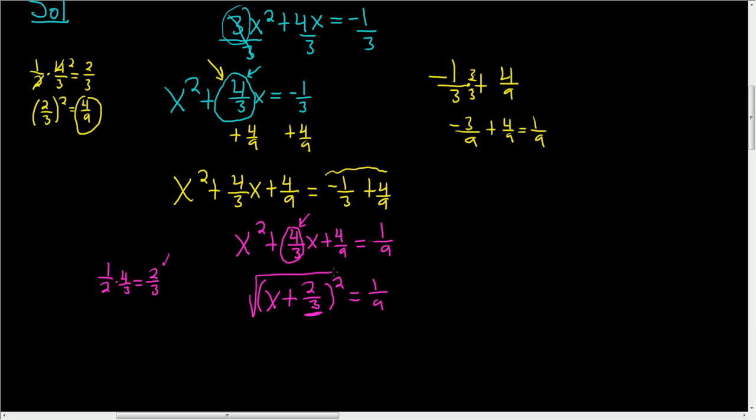To finish, we take the square root of both sides. So we end up with x plus 2 thirds equals. And then here, the square root of 1 is 1, and the square root of 9 is 3. And we took the square root of a variable term squared, so we have to have a plus or minus.